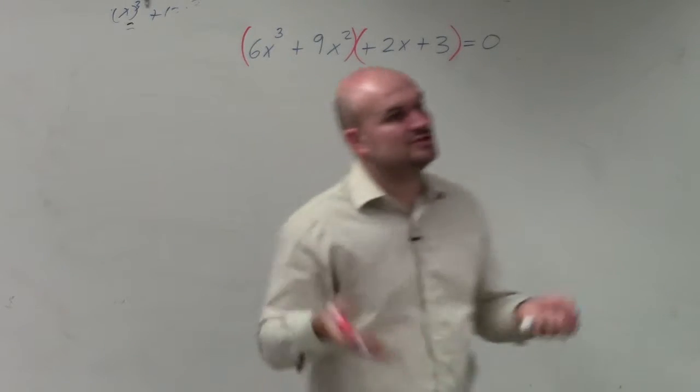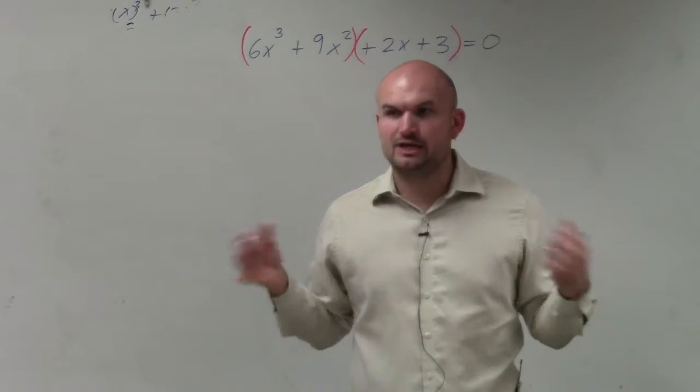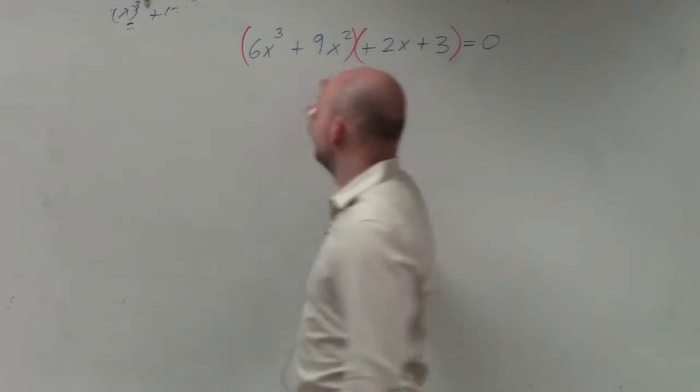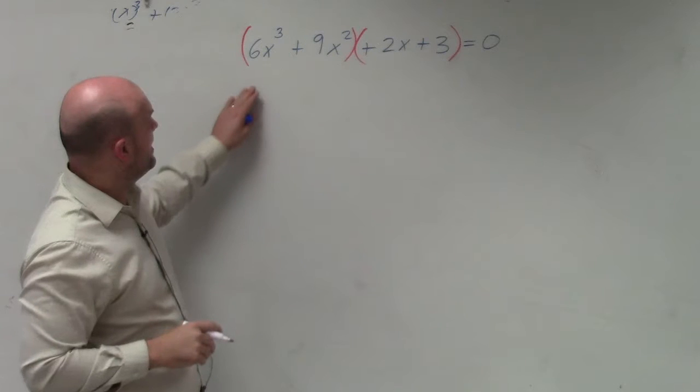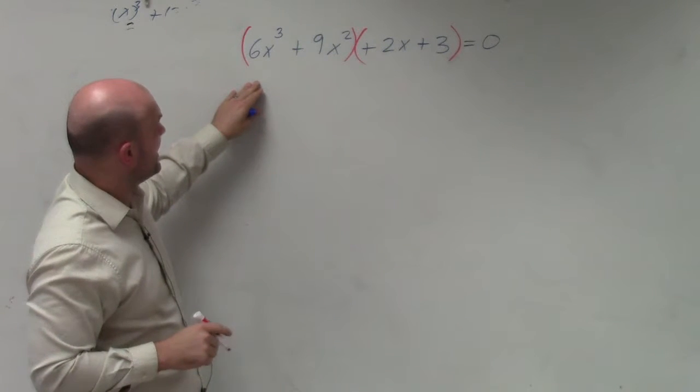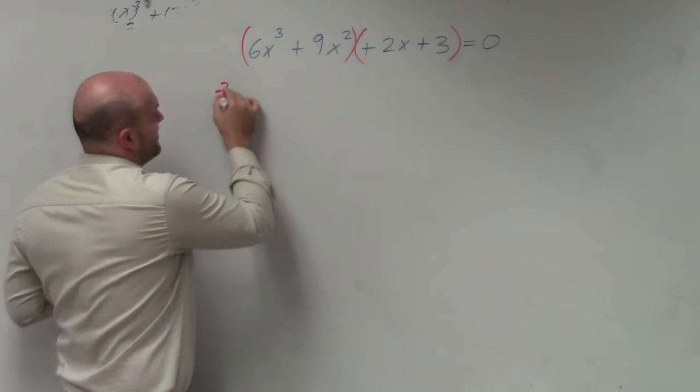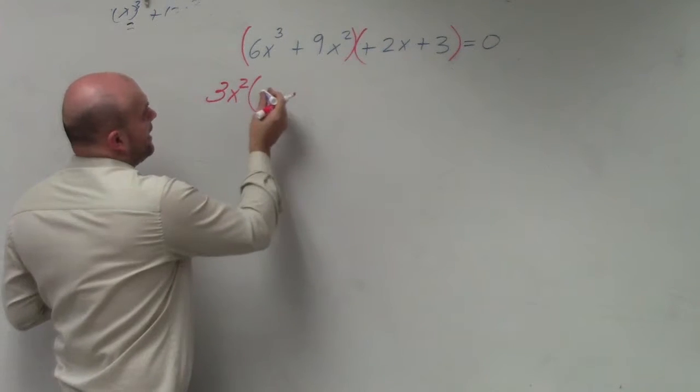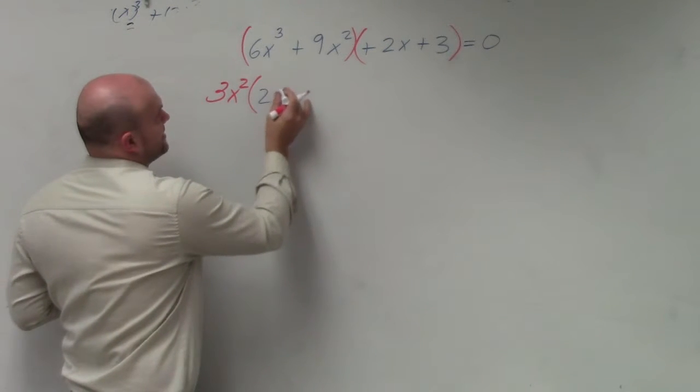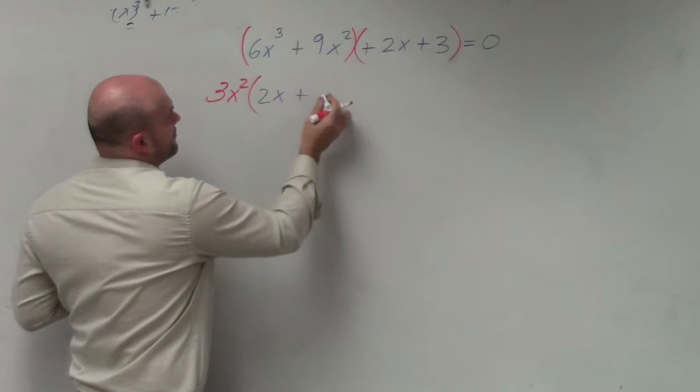Then what you do is you look at each term separately and you factor out the greatest common factor. So if I look in this first parentheses, I see that they both share a, I can factor out a 3 and a x squared. So I factor out a 3x squared. By factoring out a 3x squared, I'm left with a 2x plus 3.